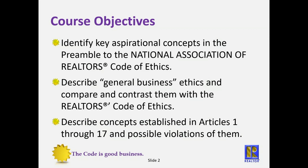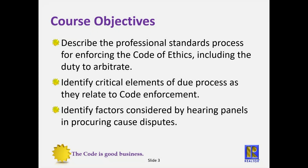Today we are going to identify the aspirational concepts in the preamble of the code, describe general business ethics, talk about Articles 1 through 17 and what would be a violation of them, describe the professional standards process and the elements of due process as they relate to the code, and identify factors considered by a hearing panel in procuring cause cases and arbitrations.